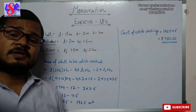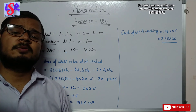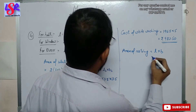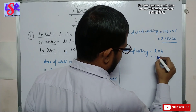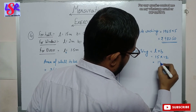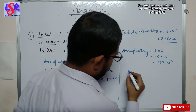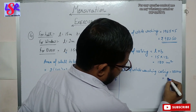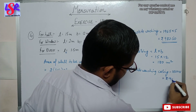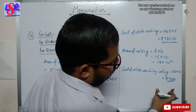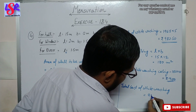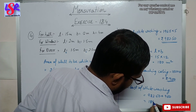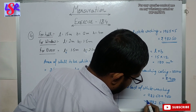For the second part, if the ceiling is also whitewashed: area of ceiling = L × B = 15 × 12 = 180 m². Cost of whitewashing ceiling = 180 × 5 = rupees 900. Total cost of whitewashing = 982.50 + 900 = rupees 1882.50.